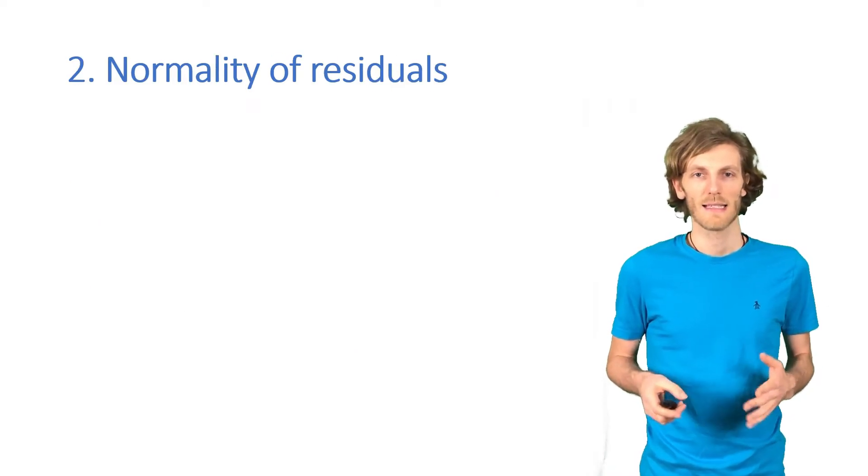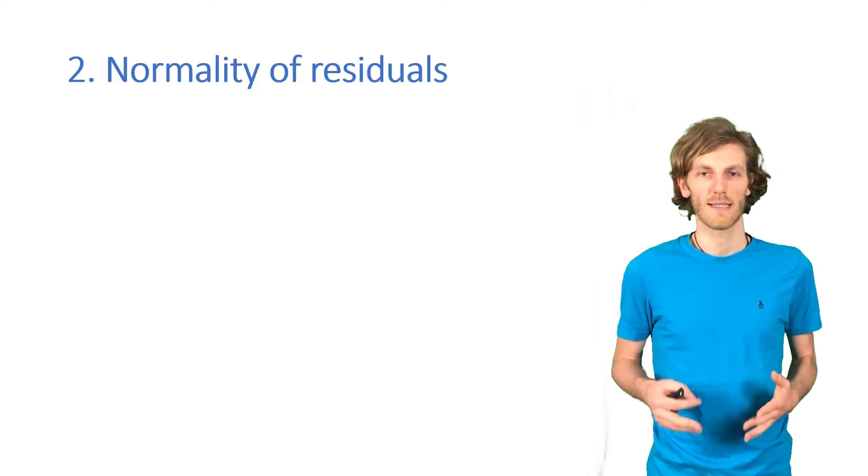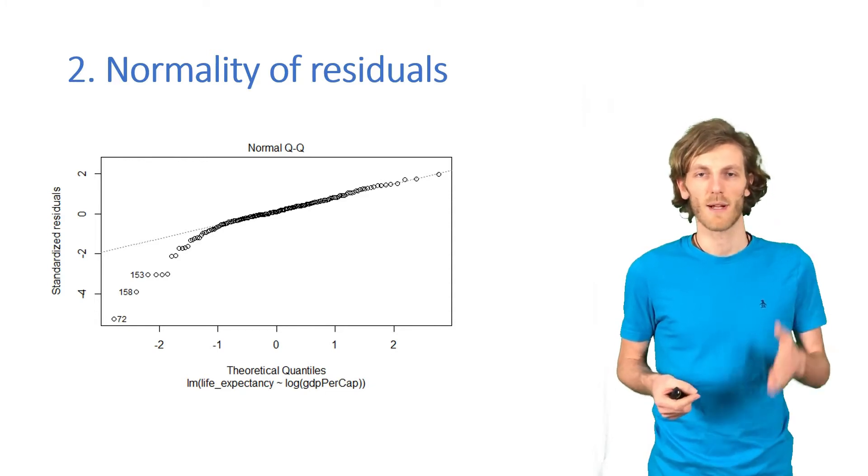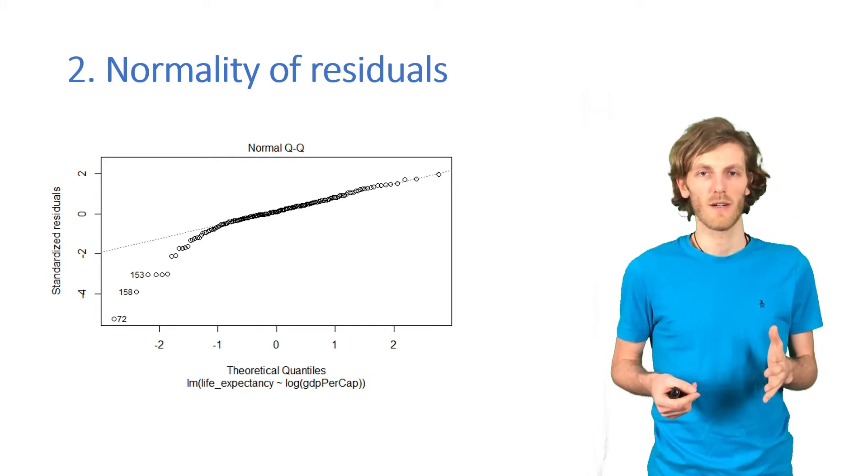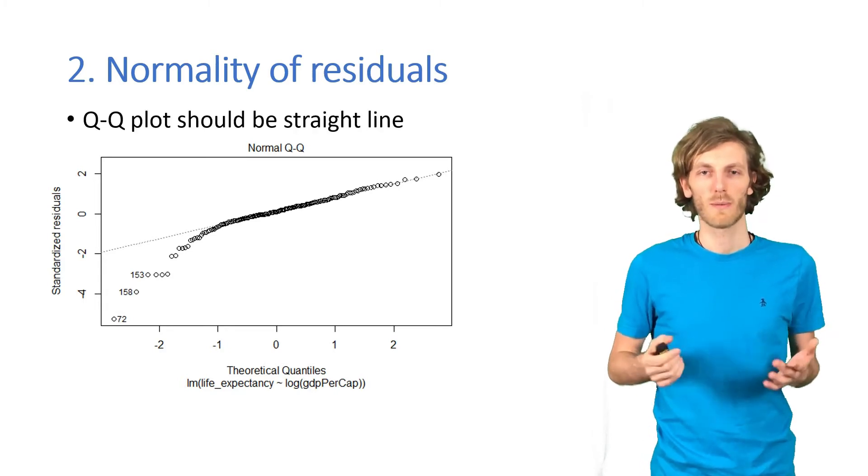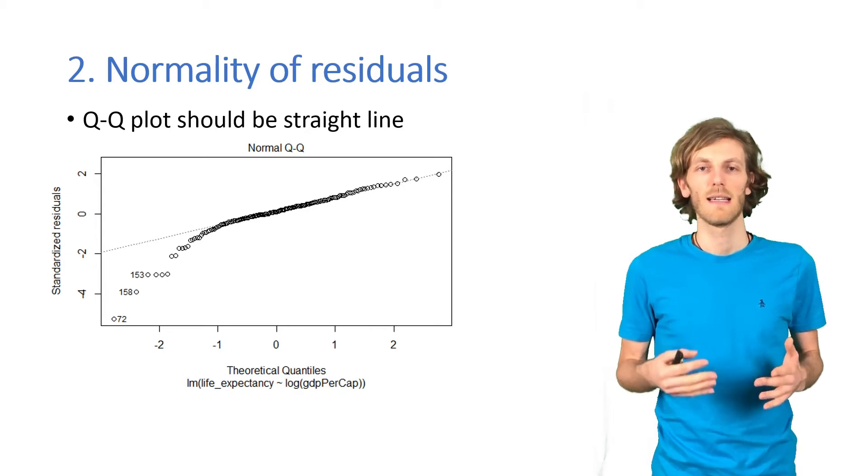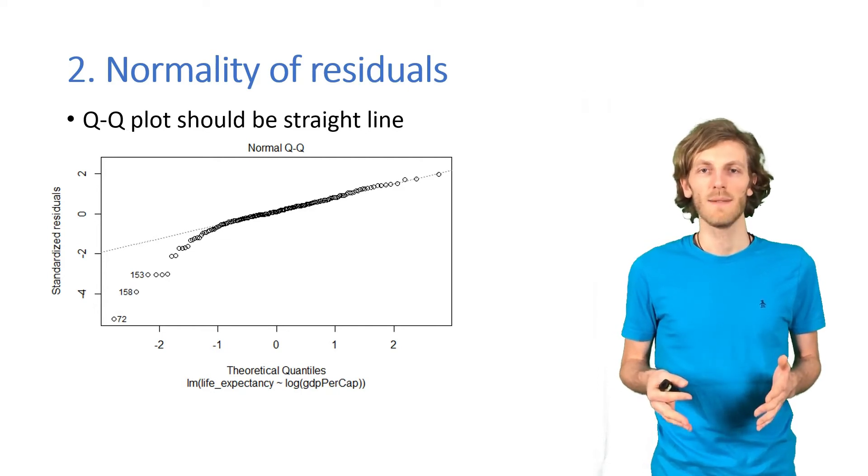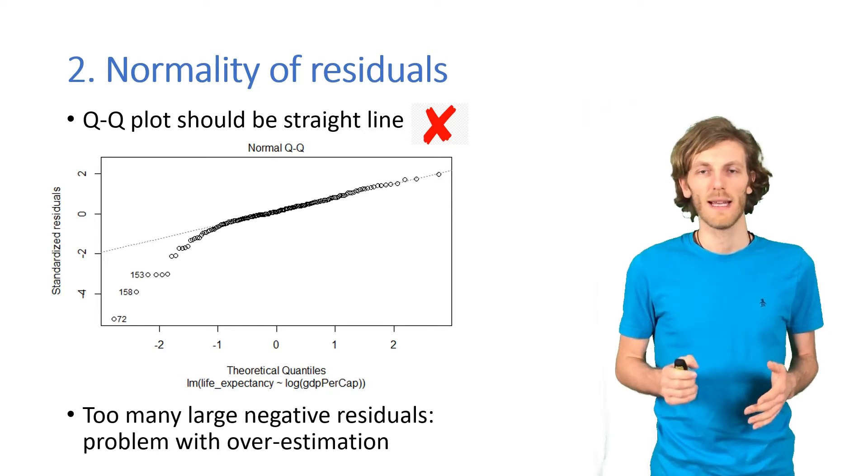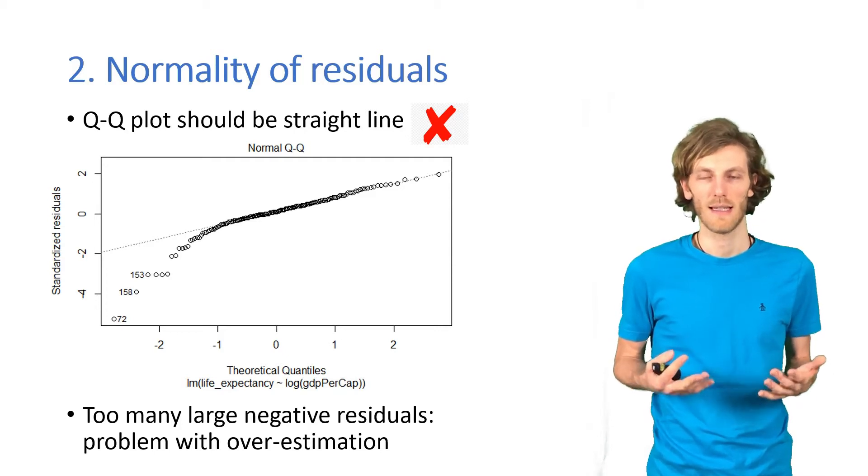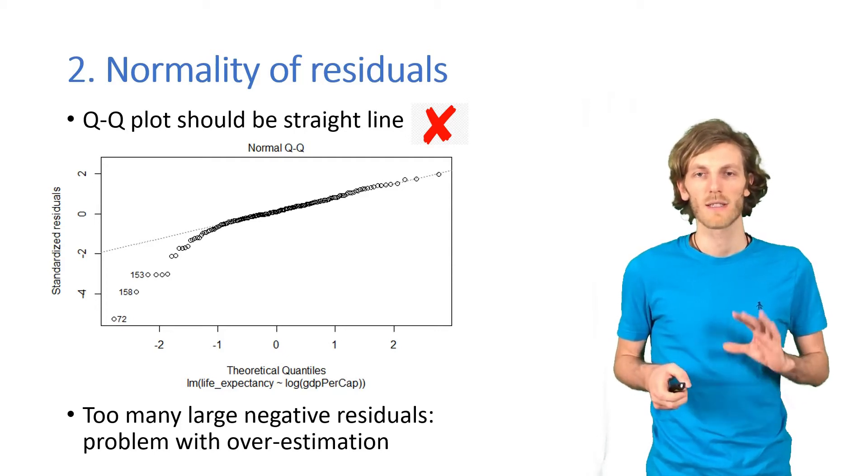The next assumption is the normal distribution of residuals. For that, the exact diagnostic plot is a so-called Q-Q plot, and what this does is that it plots our residuals, the actual distribution of our residuals, against the theoretically expected distribution of residuals if they are normally distributed. So, what we want to see is a straight line. A straight line indicates that the actual distribution of theoretical distributions exactly match. Clearly, we don't have a straight line here. In fact, we have too many large negative residuals, so we are overestimating life expectancy more often than we should if the residuals were normally distributed. So, potential problem here.